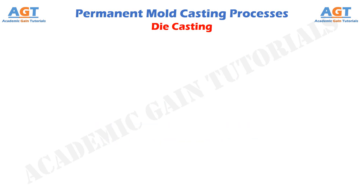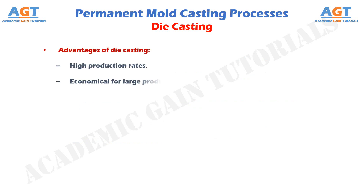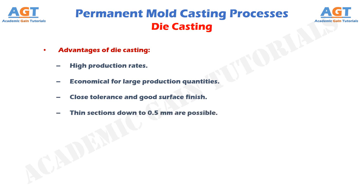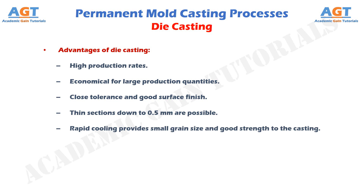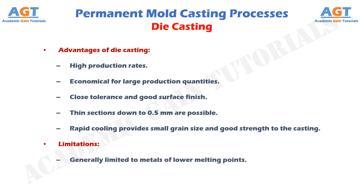Advantages of die casting include: high production rates; economical for large production quantities; close tolerances and good surface finish; thin sections down to 0.5 millimeters are possible; and rapid cooling provides small grain size and good strength to the casting. Limitations include: generally limited to metals of lower melting points; and part geometry must allow removal from the die cavity.